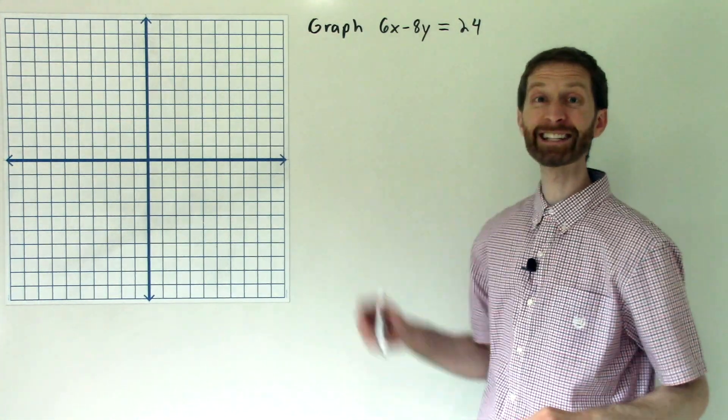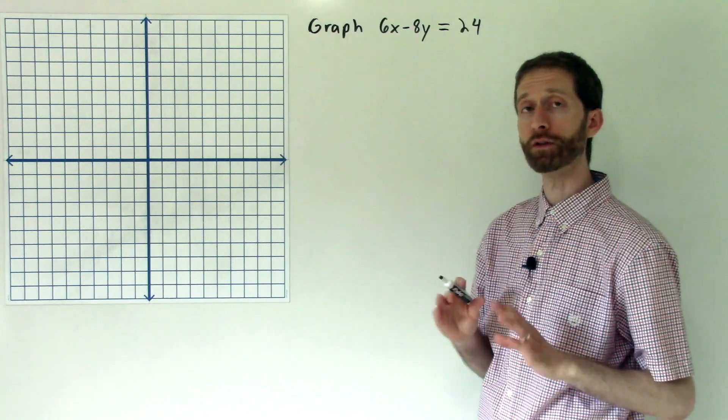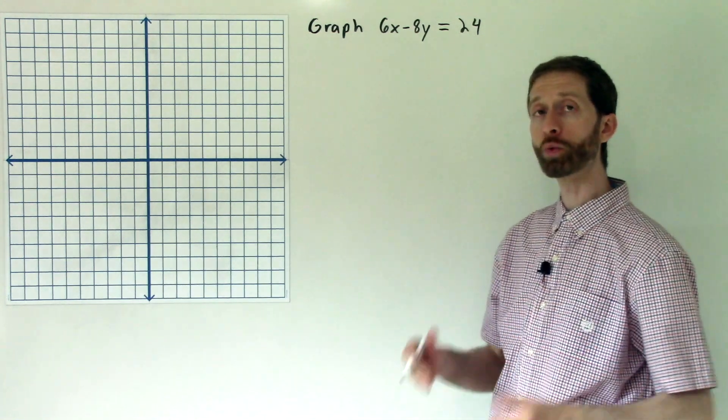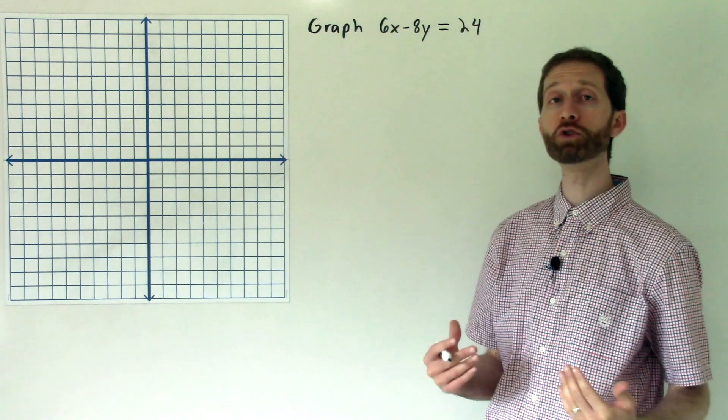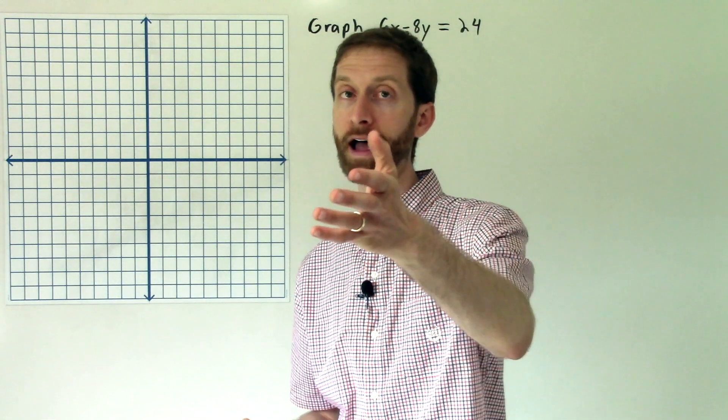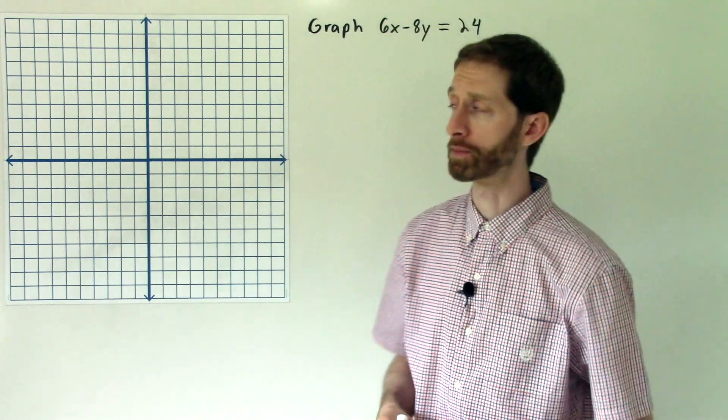So we're asked to graph 6x minus 8y equals 24. The first thing that we recognize is all we need are two points to graph a line, and the easiest two points to graph or to even find algebraically on standard form would be the x and y-intercepts.